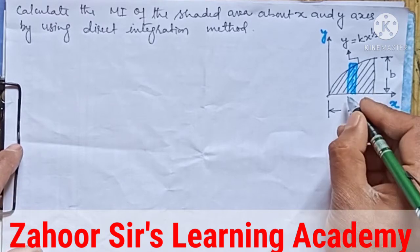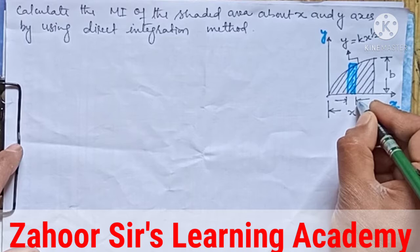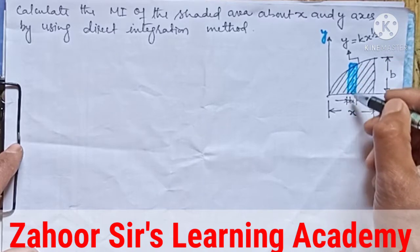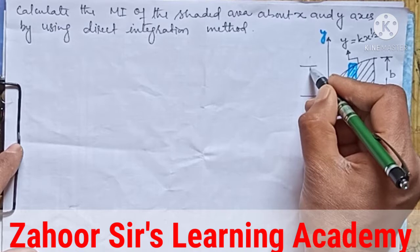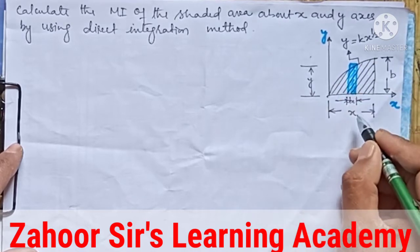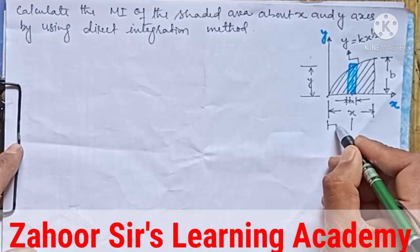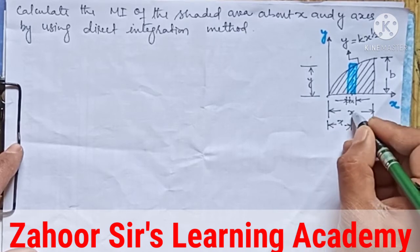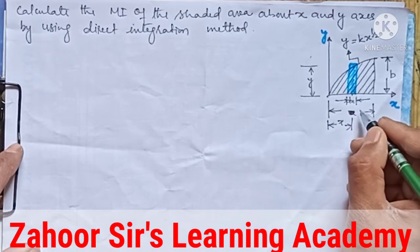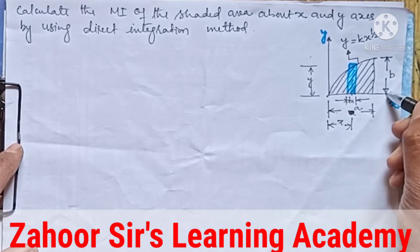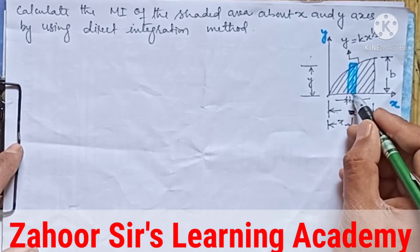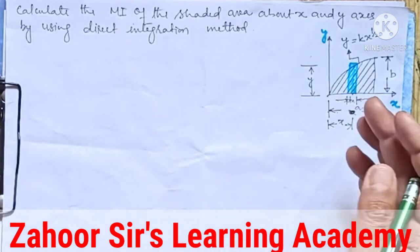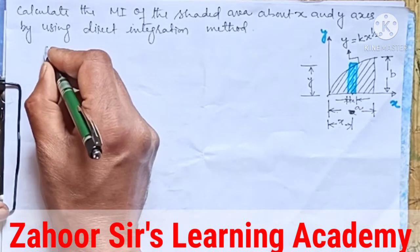We have cut this elementary strip and will give the dimensions as we did in the previous cases. From this point to this point — because it is on the X axis — this is dx, and this height is along the Y axis, therefore this height is y. This distance is a, and from this point to this point this is b. The CG of this elementary strip to the YY axis is x. This is how we have to set up the question, then we'll use the direct integration method.